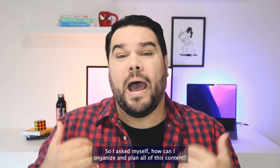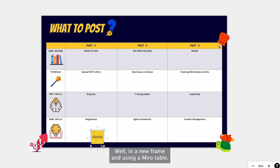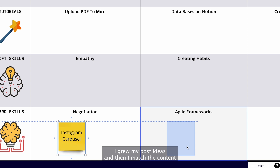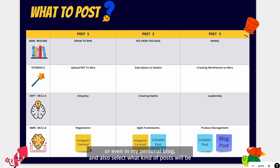So I asked myself, how can I organize and plan all this content? In a new frame and using a Miro table, I group my post ideas and then I match the content with the social network I wanted to publish on — Instagram, LinkedIn, YouTube, or even my personal blog. And also I select what kind of post it will be: a video, carousel, an Instagram story, or a single post.